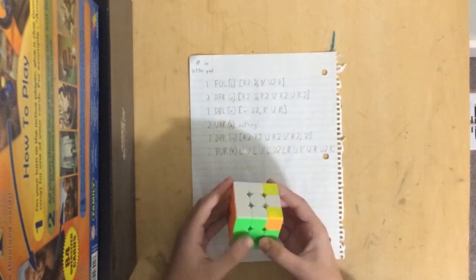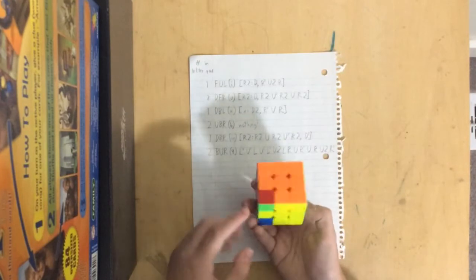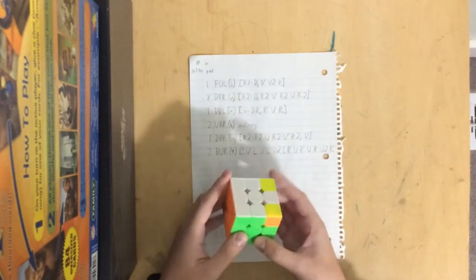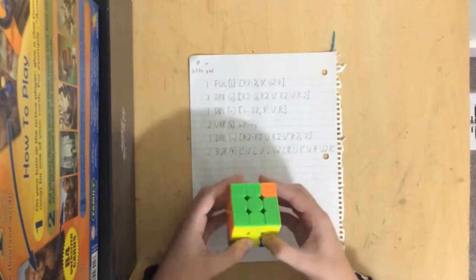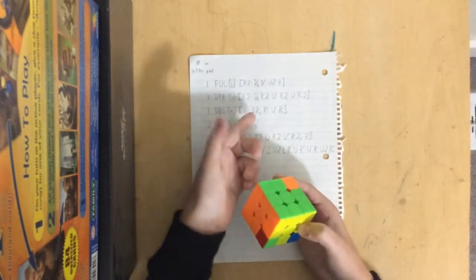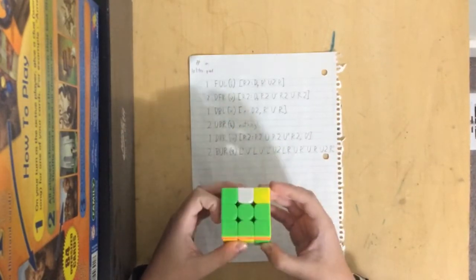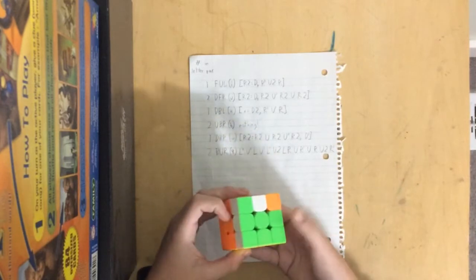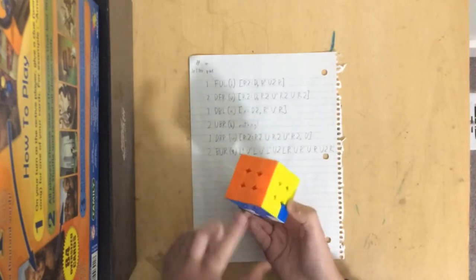Then we go to X. So for this, that's DBL. And we do an X rotation, and then we do, this is the first in the letter pair, so we just do it normally. D2, R' U' R, D2, R' U' R. And it solved it.